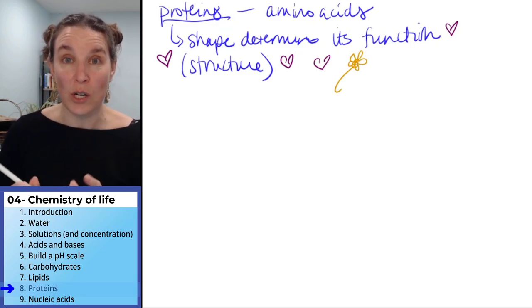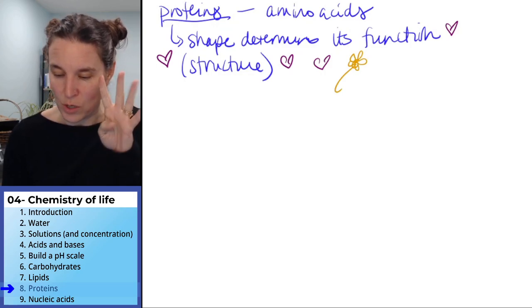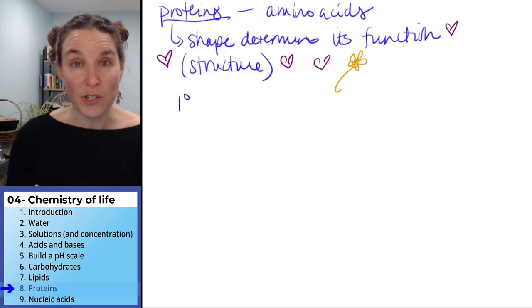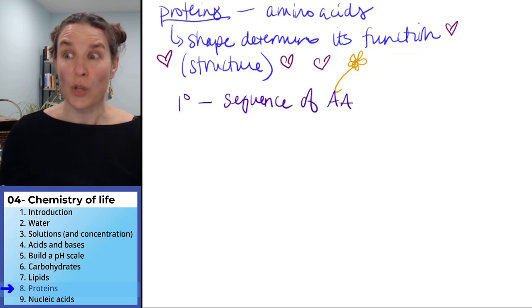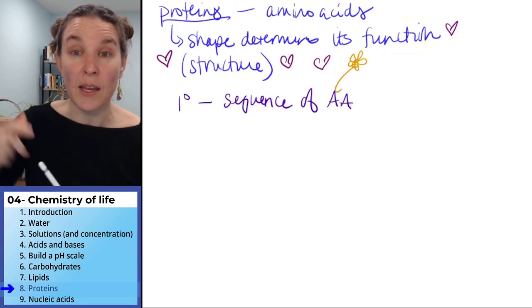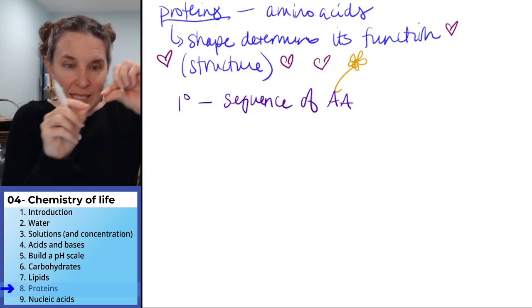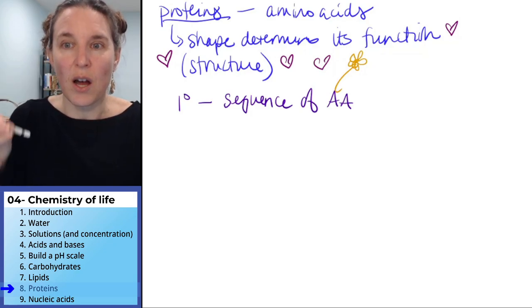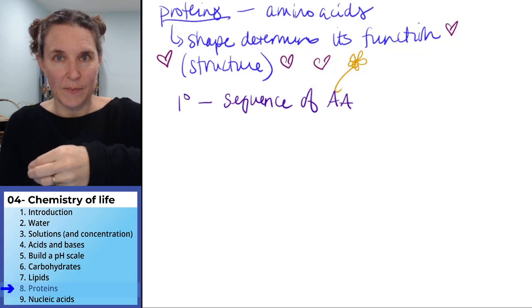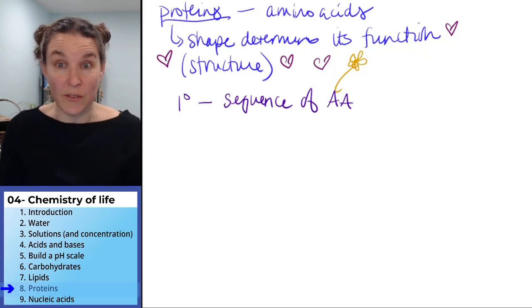Now let's talk about the structure because there are four levels of protein structure. Primary structure of a protein is just the sequence of amino acids. So remember that list of 20 amino acids I had. You could just throw those out in a line and the sequence that you tell me is the primary structure of that protein. All proteins have a primary structure. They have a sequence of amino acids that they're made of.